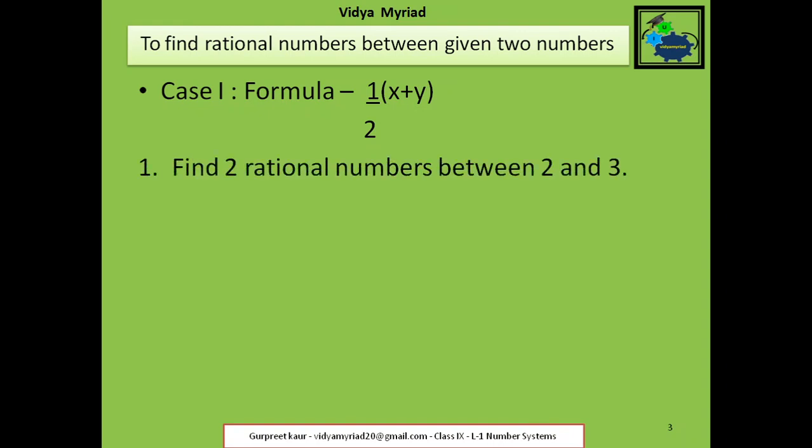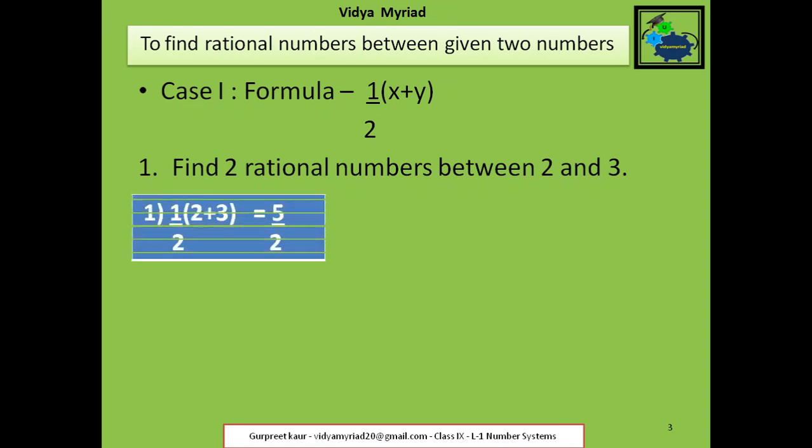Now you have a question to find out two rational numbers between 2 and 3. Here the two numbers are 2 and 3. So X is 2 and Y is 3. When I put it into the formula it becomes: 1 upon 2 multiplied by (2 plus 3), which equals 5 upon 2. Now 5 upon 2 is one rational number which I have found between 2 and 3.